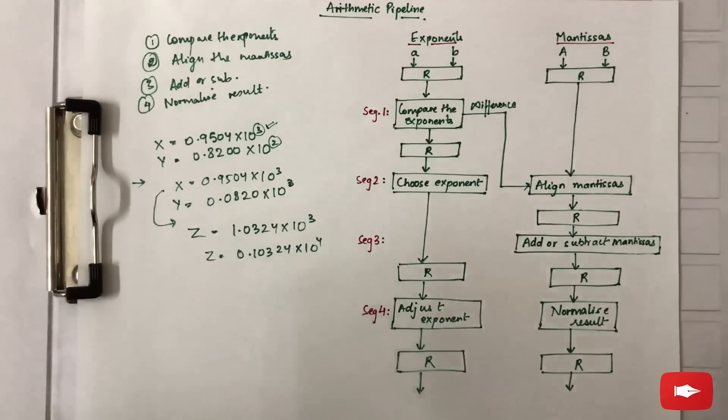This was an example illustrating the arithmetic pipeline, which is basically done to speed up processing. Thank you.